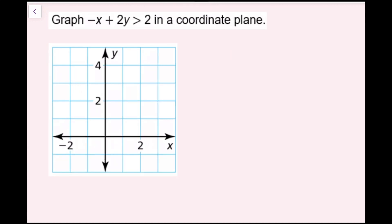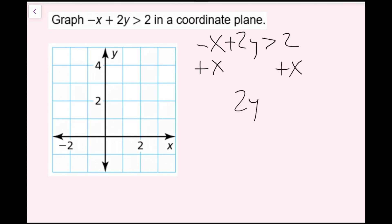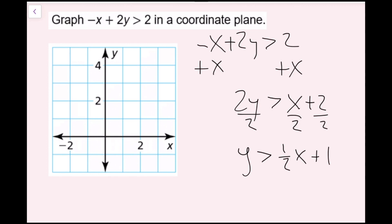In this example, we're graphing negative x plus 2y is greater than 2 in a coordinate plane. My first recommendation is to solve this inequality into slope-intercept form — y equals mx plus b form, but with our inequality symbol. Starting with negative x plus 2y is greater than 2, I add x on both sides to get 2y is greater than x plus 2. Then I divide every term by 2 and get y is greater than one-half x plus 1. So my slope is one-half and my y-intercept is 1.